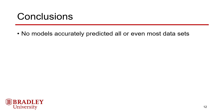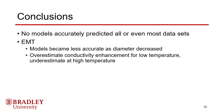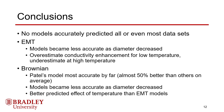Of the models examined, none were able to successfully predict all of the datasets used, and the error for each model varied significantly. The EMT models all became less accurate as diameter decreased, which makes sense because decreasing diameter increases total surface area for a given volume concentration, an effect not captured in the models. They tended to overestimate thermal conductivity enhancement at lower temperatures and underestimate at higher temperatures. In contrast, the Brownian models predicted the temperature effects much better, though they also got less accurate as diameter decreased, which was unexpected since most Brownian models include a particle diameter term. Of all the models, Patel's model was the most accurate on average by a large margin, with roughly 50% less error than the other models across the most experimental datasets observed.